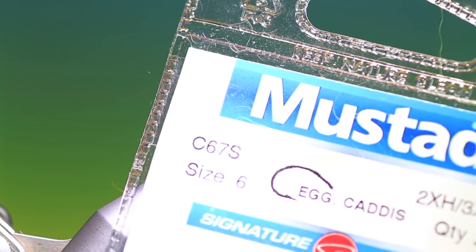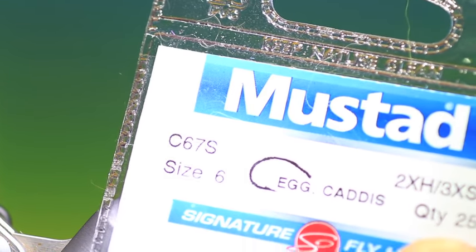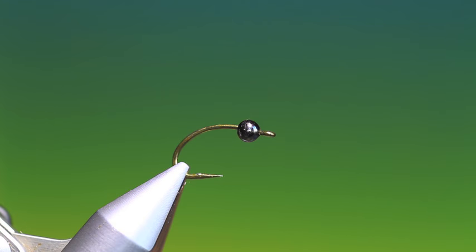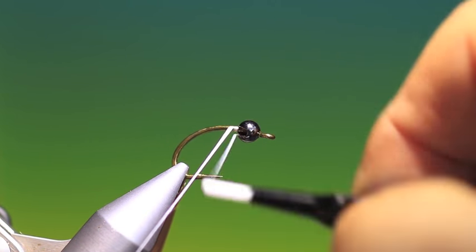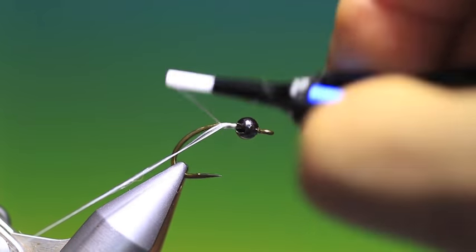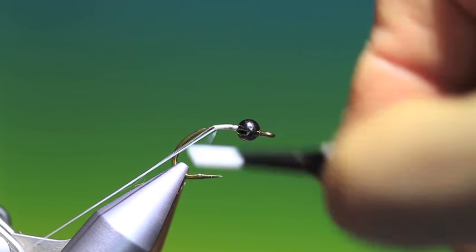Alright, we'll start off with a C67 Mustad. This is an egg caddis, very strong hook, and this is a very simple but semi-realistic caddis larva I'm doing.